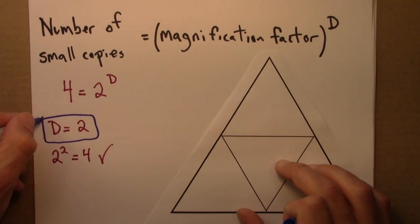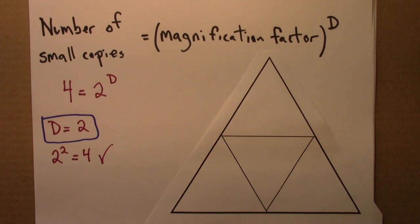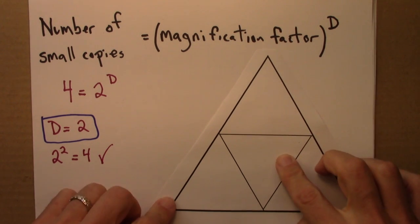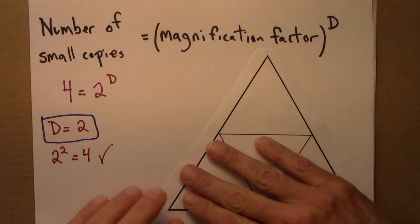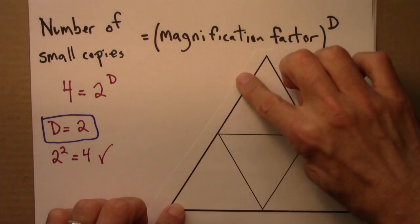So that means that the dimension of this object is two. It's two dimensional. And that makes sense. We know that triangles are two dimensional. They live in a plane. They extend in two different directions.